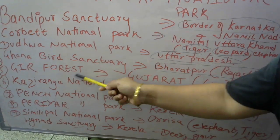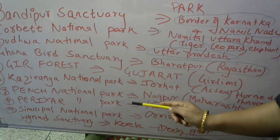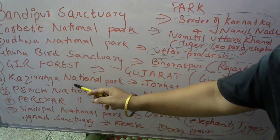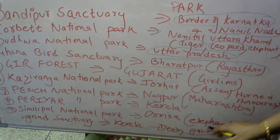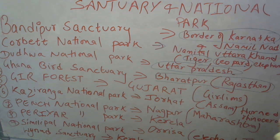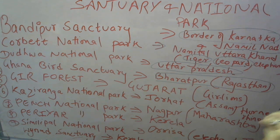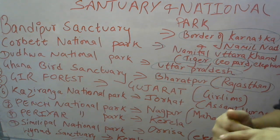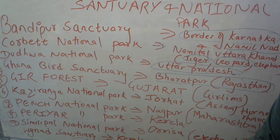So my friends, to recap: Kaziranga and Kanha National Parks are very important. Kaziranga National Park is famous for the One-Horned Rhinoceros. Periyar National Park is in Kerala. Simlipal National Park is in Odisha, famous for Elephants and Tigers. Ghana Bird Sanctuary is in Bharatpur, Rajasthan. These are the important national parks and sanctuaries for competitive exams. Don't forget to subscribe to my channel — thank you, friends.